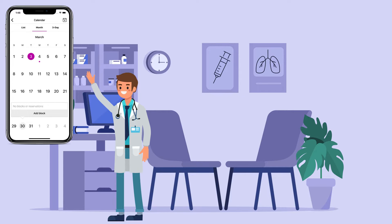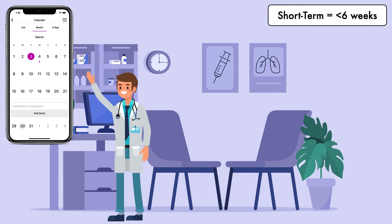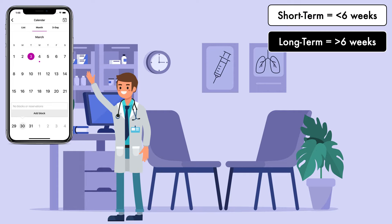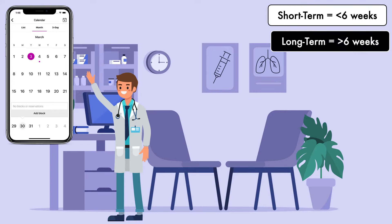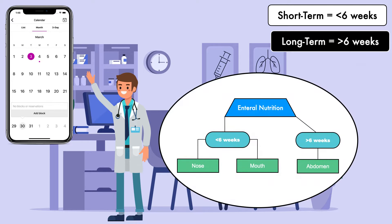In this context, short-term is generally considered to be anything that is less than six weeks, while long-term is considered to be anything that is more than six weeks. This is an approximation more than it is a hard and fast rule. With short-term feeding, the primary point of entry for the tube is the nose or the mouth. With long-term feeding, the primary point of entry is the abdomen. Using this information, we can begin to build a flowchart.